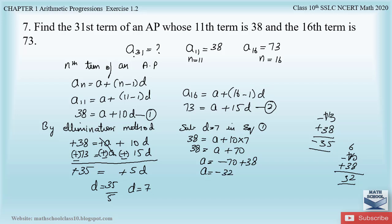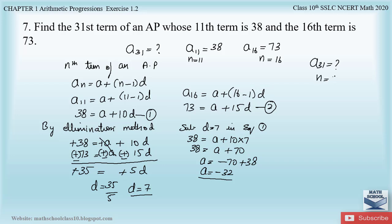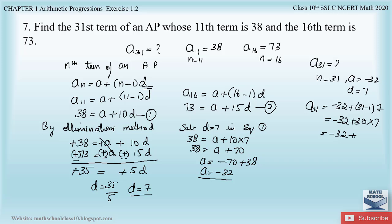Now let us find the 31st term of the AP by substituting a = -32 and d = 7 into the nth term formula with n = 31. a₃₁ = -32 + (31 - 1) × 7 = -32 + 30 × 7 = -32 + 210 = 178. So a₃₁ = 178.